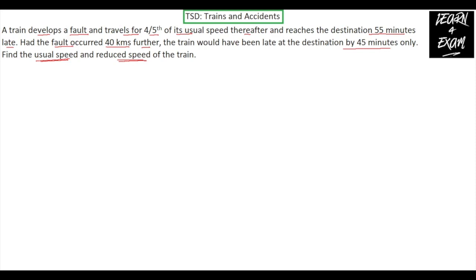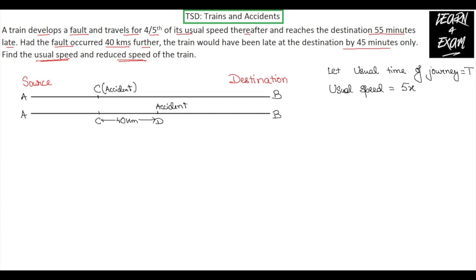So first of all, let us draw a suitable diagram to understand what is happening in the question. In this figure we can see that A is the source and B is the destination from which the train starts and arrives. Point C is the accident point in the first case and point D is the place where the accident takes place in the second case. Now since point C and point D are 40 kilometers further, as per the question, we have mentioned the distance between C and D is equal to 40 kilometers.